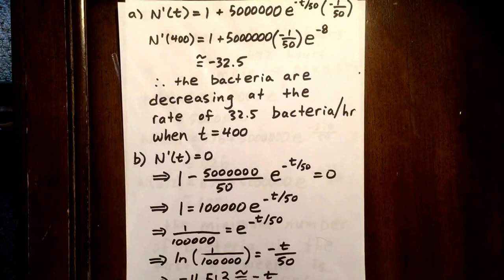So in other words, the rate of change of the bacteria is negative, meaning the number of bacteria are decreasing, and it's at a rate of 32.5 bacteria per hour when t is equal to 400 hours.